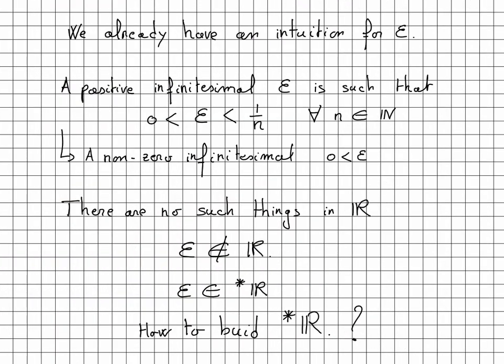In some ways, we already have intuition about epsilon, an infinitely small. An epsilon, an infinitesimal, is a number between zero and one over n for all n integers. I should have said a non-zero infinitesimal, as we insist that epsilon is larger than zero.